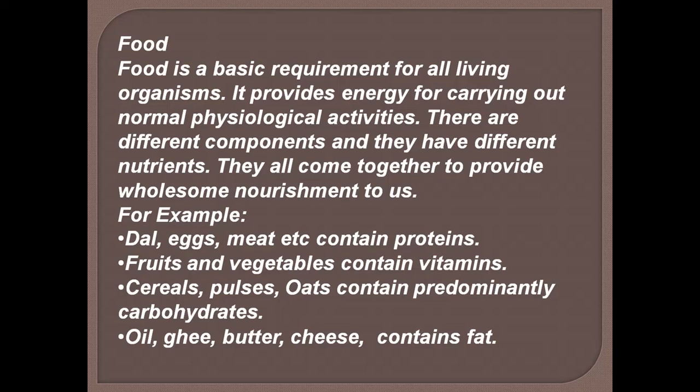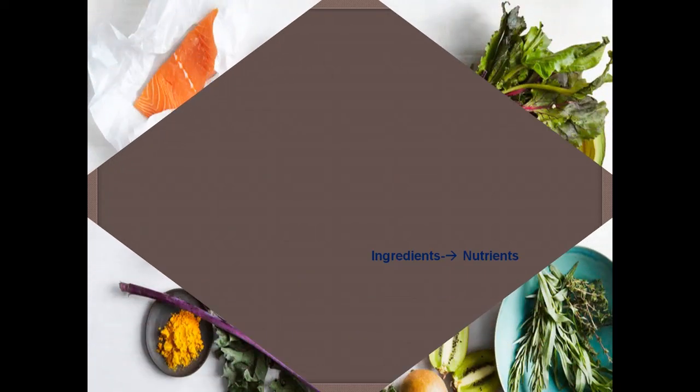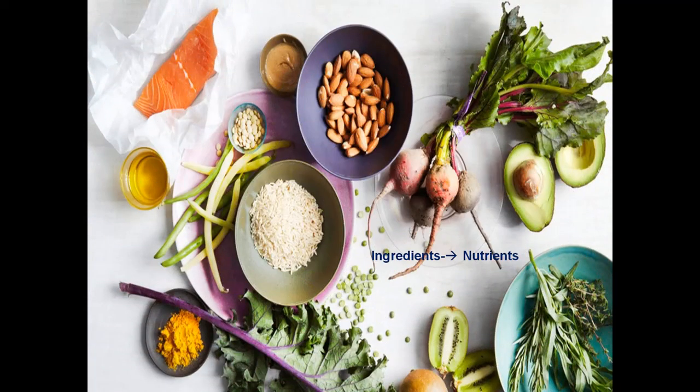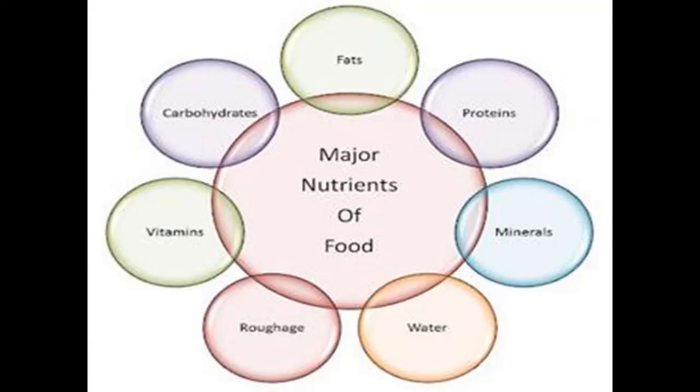Food provides energy for carrying out normal physiological activities. There are different components and they have different nutrients. In the previous chapter, you have learnt about ingredients. The substances that are used in the preparation of food are called ingredients. The ingredients used contain one or the other nutrients in them. Let us recall about major nutrients of food.